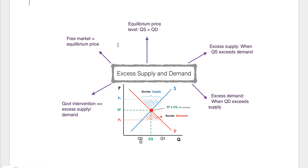So if we're operating in a free market, we're always going to operate at this equilibrium price because natural forces can be expected to encourage prices to adjust to the equilibrium price level.